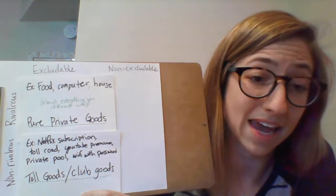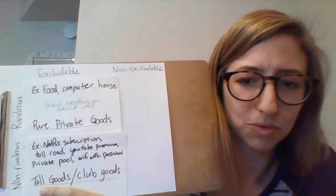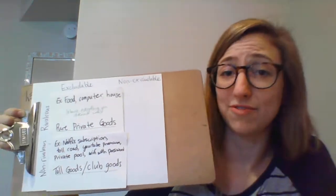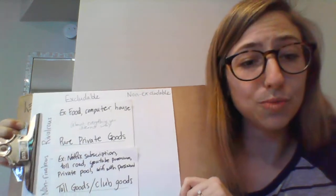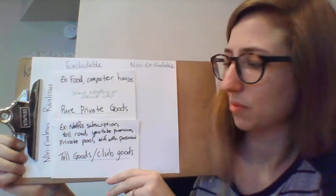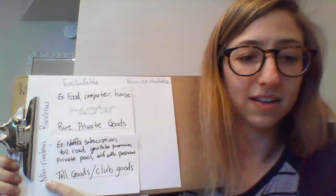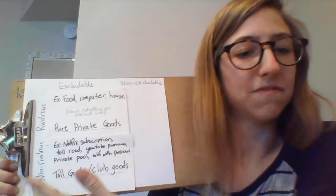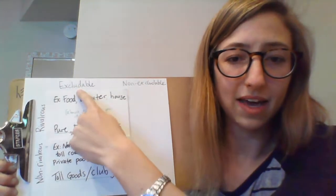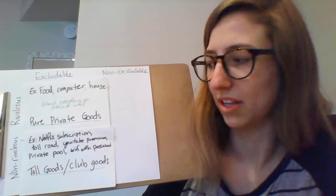A toll road is also an example — you have to pay to get on it, so it's excludable. And because most people want to avoid paying, they don't take the toll road, so there's almost never traffic and it feels non-rivalrous. YouTube Premium — you have to pay, and your subscription doesn't affect someone else's ability to get one. A private pool: you have to pay to get in, it's not crowded, so it doesn't feel rivalrous. And Wi-Fi with a password: you had to pay, and lots of people can share it without really affecting others.